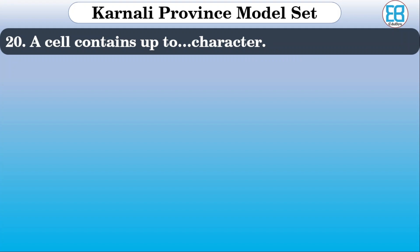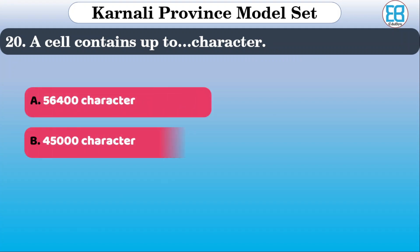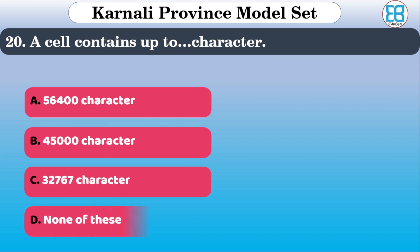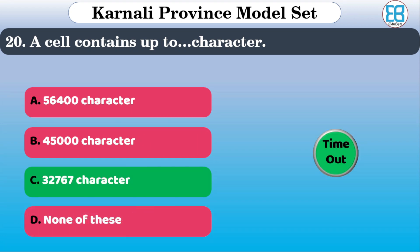A cell contains up to how many characters? The correct option is 32,767 characters — that is the maximum character size for a cell.